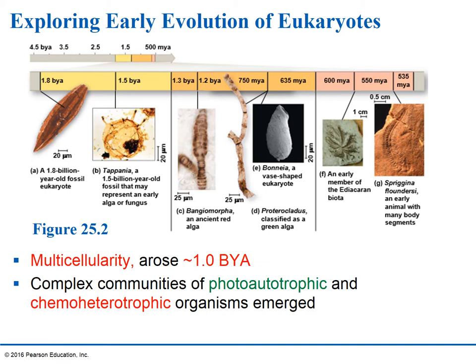Multicellular eukaryotic organisms arose about 1 billion years ago. We start to see complex communities of photoautotrophic and chemoheterotrophic organisms emerging during this 1 billion year time period, maybe just a little less than 1 billion years ago. Following this timeline, you can see the origins of eukaryotic cells at about 1.5 billion years, and then some primitive multicellular eukaryotic organisms evolving at around 1 billion years ago.